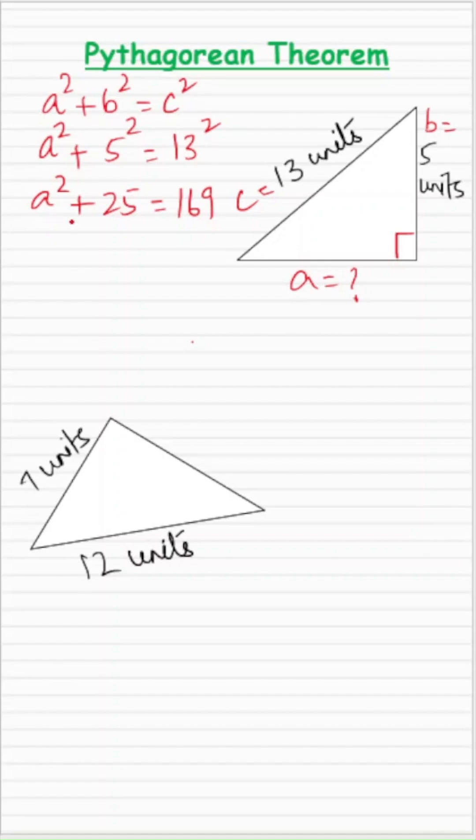To find the value of A, I need to eliminate this +25. I'll subtract 25 from both sides to preserve equality. Whatever we do on one side, we do the same on the other side. So +25 - 25 gets cancelled, and A² comes out to be 169 - 25 = 144.